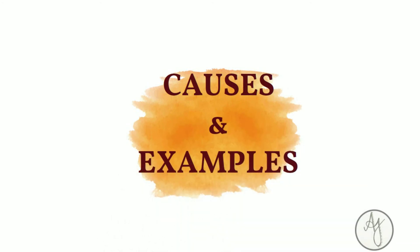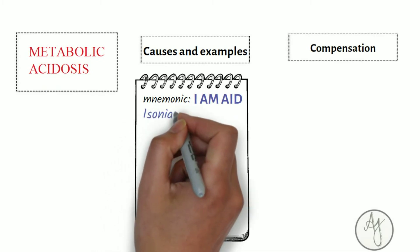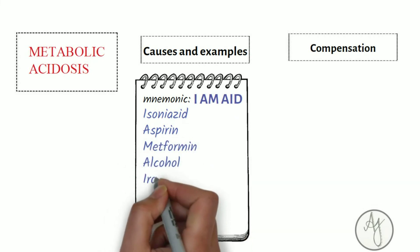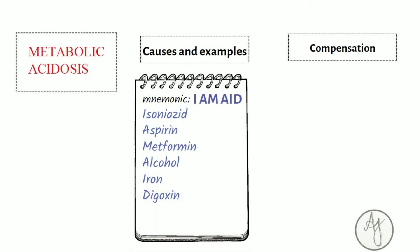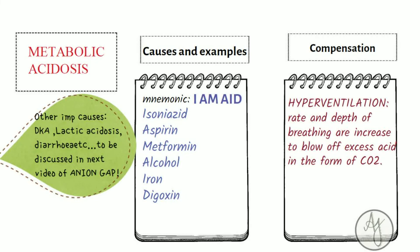Let's discuss some important causes of metabolic acidosis. I have a simple mnemonic: tell yourself 'I AM AID' — you are an aid to people. I AM AID stands for Isoniazid, Aspirin, Metformin, Alcohol, Iron, and Digoxin. Excess of all of these causes metabolic acidosis. When the body is in metabolic acidosis, we compensate by hyperventilation — during hyperventilation we blow off excess carbon dioxide, which is also an acidic component of our body.